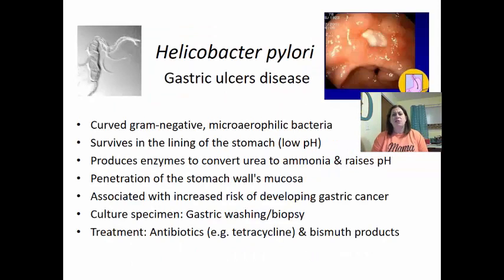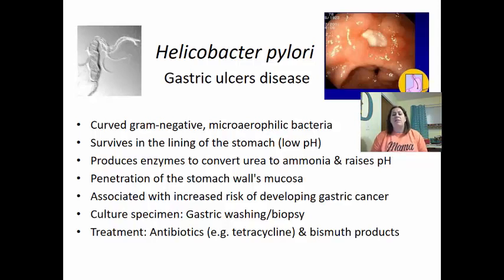Helicobacter pylori can cause gastric ulcer disease. It is a curved gram-negative microaerophilic bacterium that survives in the lining of the stomach. It produces enzymes to convert urea into ammonia, raising the pH around it to allow growth. Its penetration of the stomach's mucosa potentially causes ulcers to develop, and it is associated with an increased risk of gastric cancer. Culture requires gastric washing and biopsy. Treatment is tetracycline and bismuth products like Pepto-Bismol.